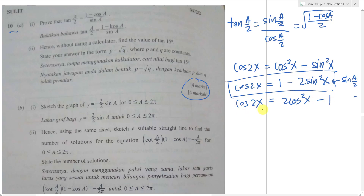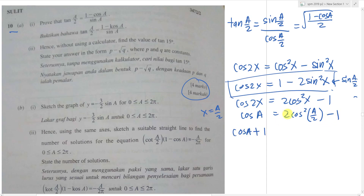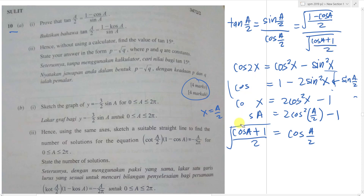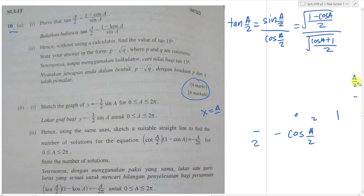Now I let x = a/2 for the cosine formula. Plugging in gives cos a = 2cos²(a/2) − 1. Moving −1 across gives cos a + 1 = 2cos²(a/2), divide by 2, take the square root. So cos(a/2) = √((cos a + 1)/2). This is how I get both half-angle formulas using the double-angle formula for cosine.